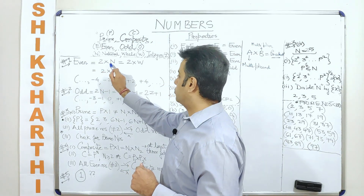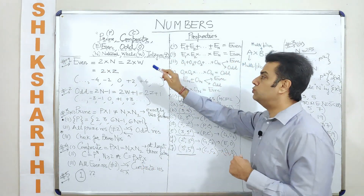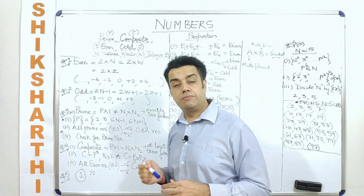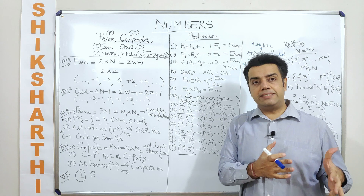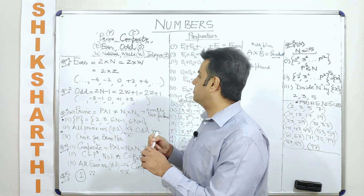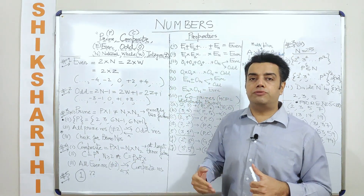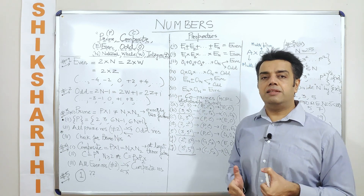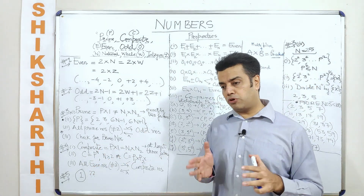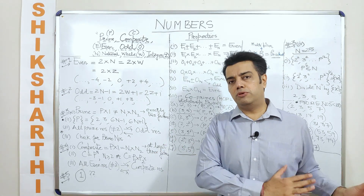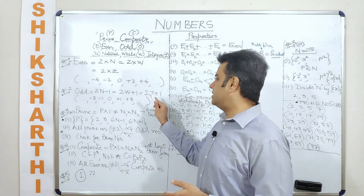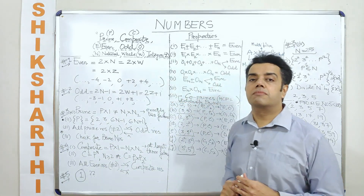Even numbers can be written as a product of 2 numbers wherein the multiplicand is 2 and the multiplier will be a natural number, or a whole number, or an integer. If I say even natural numbers, they would be 2, 4, 6, 8 and so on. If I say even whole numbers, the set starts from 0, then 2, then 4 and so on. If I say even integers, I talk about plus 2 and minus 2, plus 4 and minus 4, including 0, on both extremities — the positive side and the negative side.